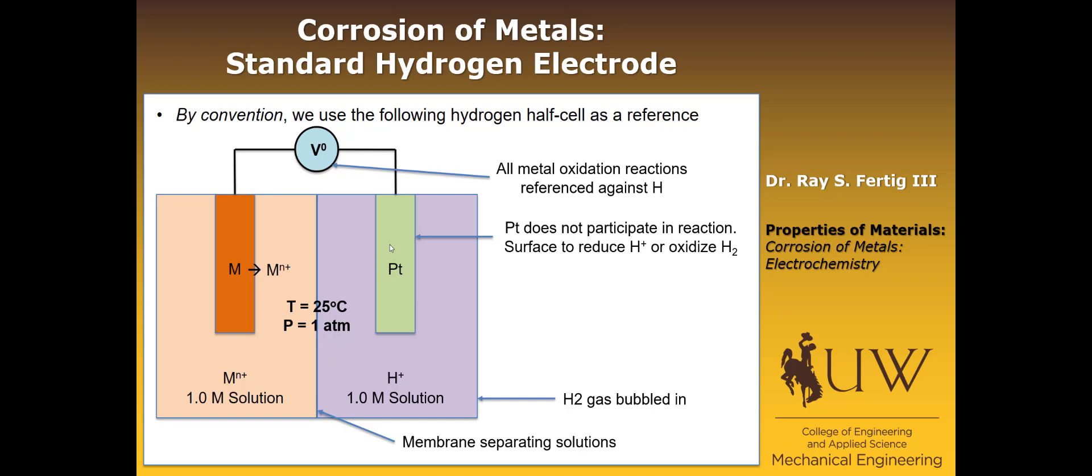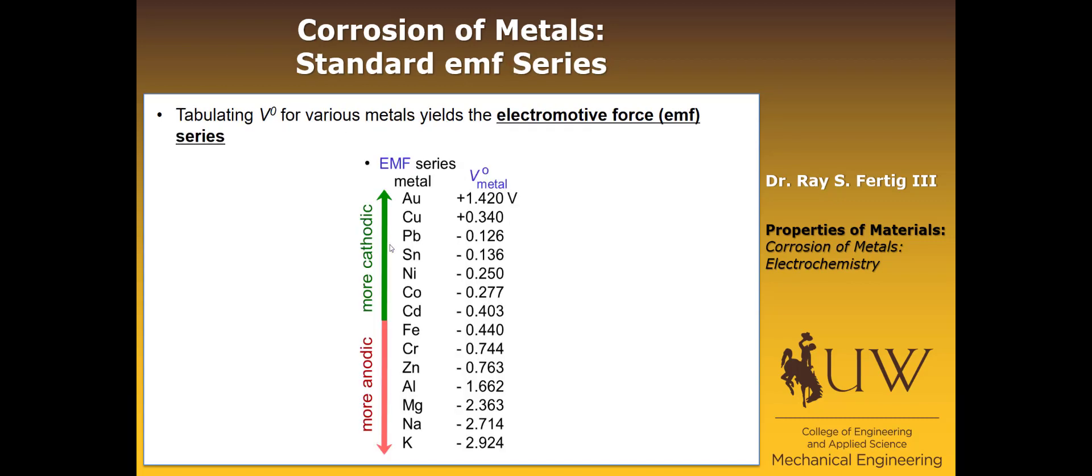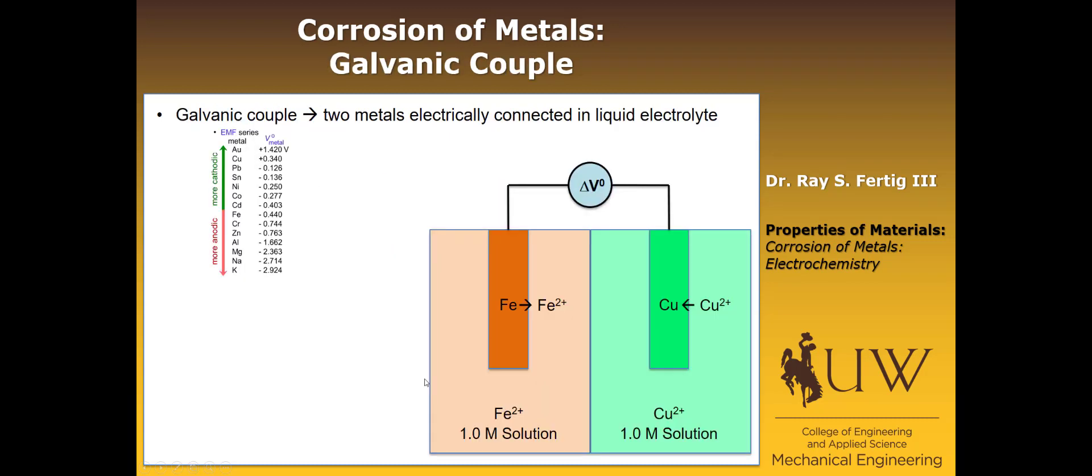If we go ahead and tabulate this V0 value for various metals, it yields a table that we call the electromotive force series. All it does is give you that V0 value that we would have computed from the standard hydrogen electrode for various metals or metal alloys. The feature here is that, just like we said before, the higher the voltage, the higher the potential, the more difficult it is to oxidize. So high V0 means hard to oxidize. You kind of know that just looking at this series. You think of gold, you don't think of that as oxidizing very much. That's why we make jewelry out of it, because it stays unoxidized easily. On the other end, we have something that's easy to oxidize. These are very low values of V0.